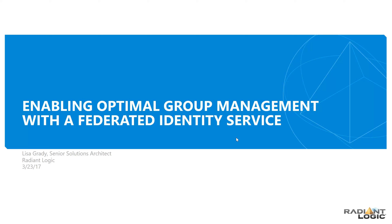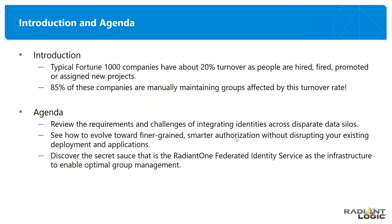Thank you, Emily. So let's get started. The focus of today's webinar is on optimizing groups management. If your organization is like most of the Fortune 1000, you deal with about 20% turnover as people are hired and fired, promoted, assigned new projects. Some statistics have shown that 85% of these companies are manually maintaining groups affected by these turnover rates, because applications are relying on these groups to make sure policies are enforced, giving people right access to the right resources. So keeping these groups up to date might be painful, but they're absolutely essential.